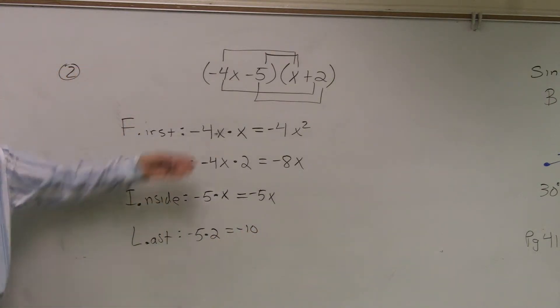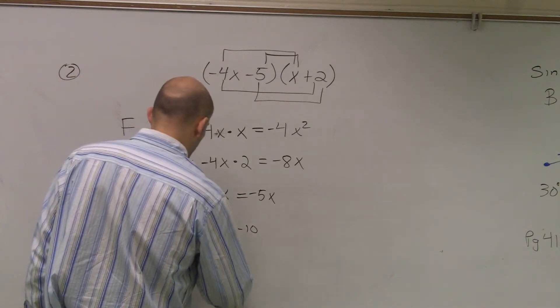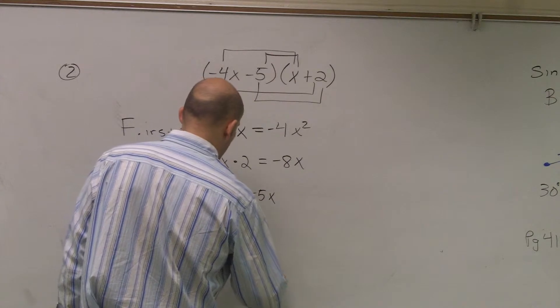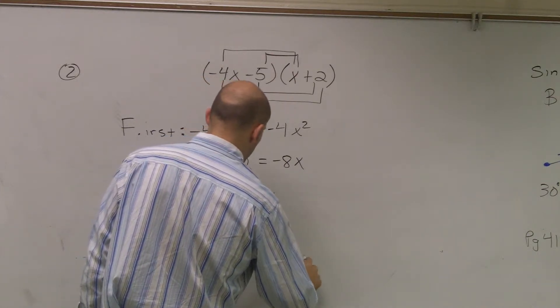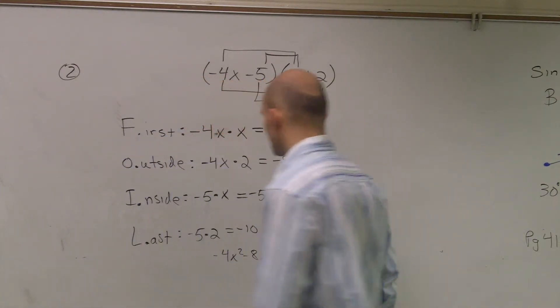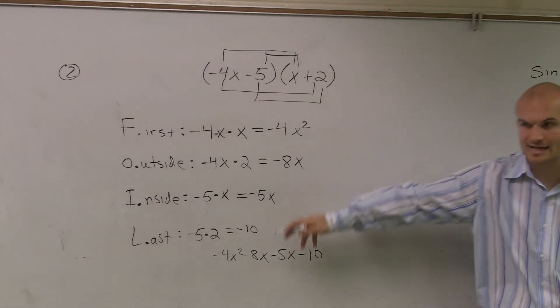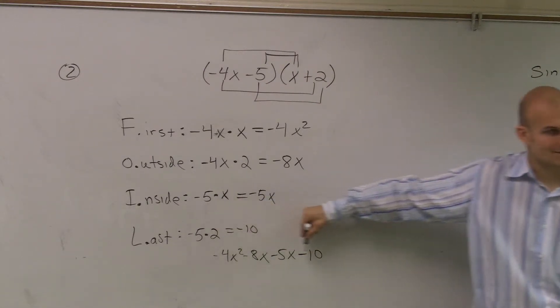So now what I can do is I can just rewrite all my answers together. So I have negative 4x² minus 8x minus 5x minus 10. So now you just take all of your answers and you write out all the answers together.